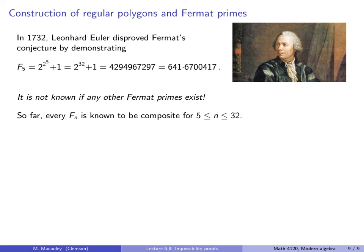It is not known to this day, in 2016, if any other Fermat primes exist. So far, every Fermat number is known to be composite up to f32. That's incredible. We don't know if f33 is composite. And actually, we don't even know the complete factorization of these Fermat numbers past, I think, n equals 11.